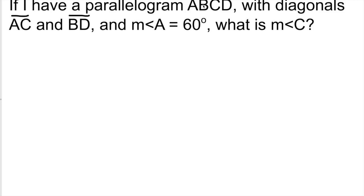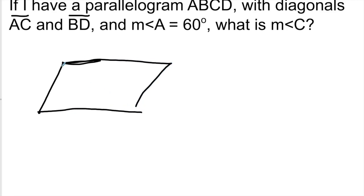Our first problem: if I have a parallelogram ABCD with diagonals AC and BD, and the measurement of angle A is 60 degrees, what is the measurement of angle C? The first thing we're going to do is, if we don't have a parallelogram drawn already, you want to visualize it by drawing the parallelogram. When you're labeling, it's extremely important to start at a point and go clockwise around.